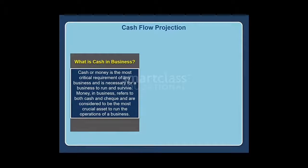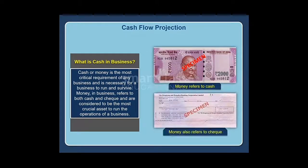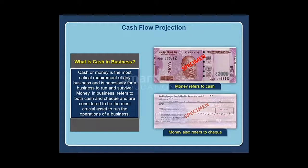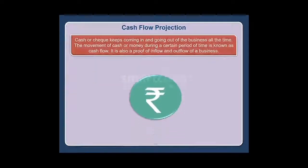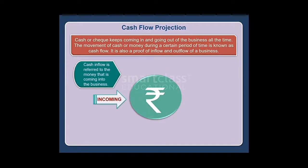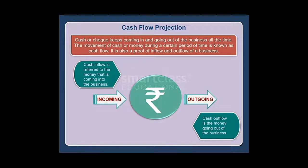Cash or money is the most critical requirement of any business and is necessary for a business to run and survive. Money in business refers to both cash and check and are considered to be the most crucial asset to run the operations of a business. Cash or check keeps coming in and going out of the business all the time. The movement of cash or money during a certain period of time is known as cash flow. It is also a proof of inflow and outflow of a business. Cash inflow refers to the money coming into the business, while cash outflow is the money going out of the business.